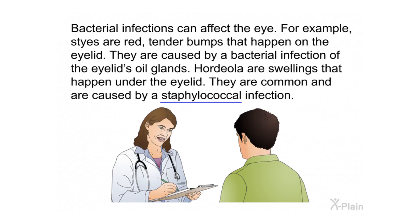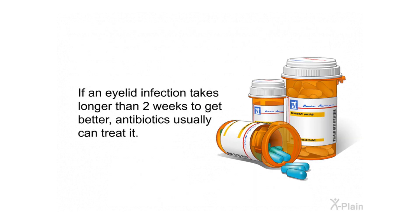Bacterial infections can also affect the eye. Styes are red, tender bumps that happen on the eyelid caused by a bacterial infection of the eyelid's oil glands. Chalazia are swellings that happen under the eyelid; they are common and are caused by a staphylococcal infection. If an eyelid infection takes longer than two weeks to get better, antibiotics can usually treat it.